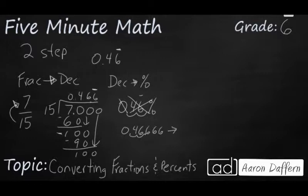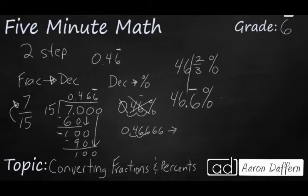So there's two ways to write that. 46.6 repeating percent, or if you know your benchmark fractions, you know that 46 and 2 thirds is the same, because 0.6 repeating is the same as 2 thirds.